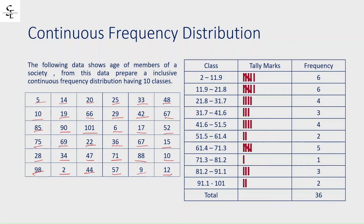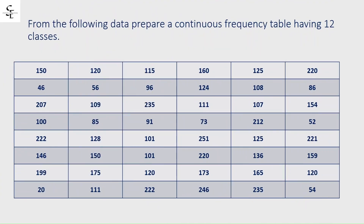Now let's move on to the assignment. From the following data, prepare a continuous frequency distribution having 12 classes. We have already solved a similar sum with 10 classes, so this should be straightforward — instead of 10 classes you are required to prepare 12 classes. I hope you will be able to do this very easily.